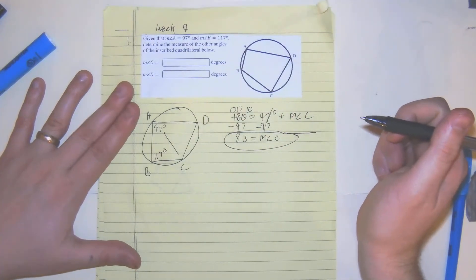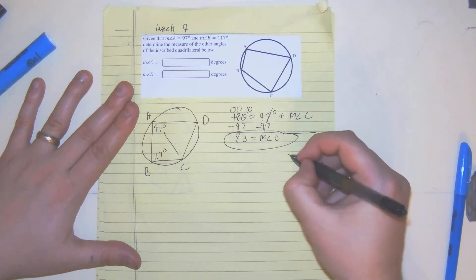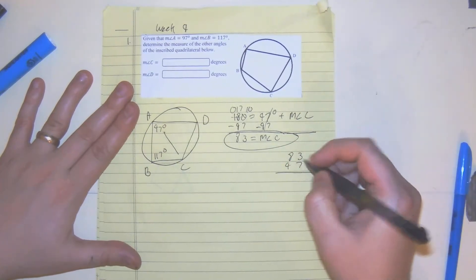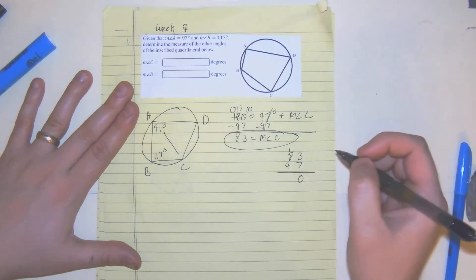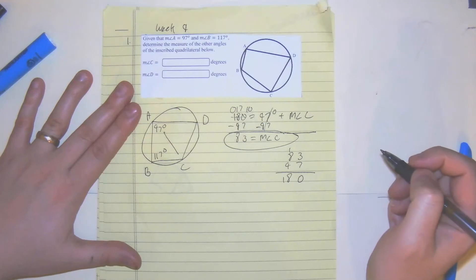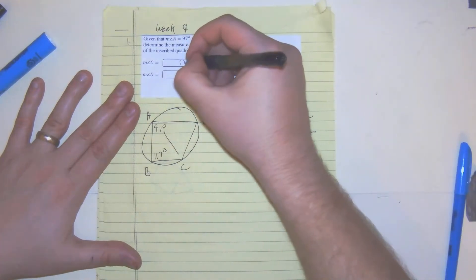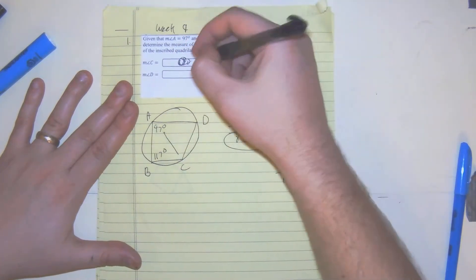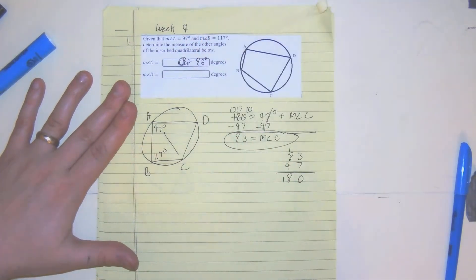So you can always check your work by going backwards and saying, okay, 83 plus 97, 0, 1, 180. Okay, so we know we did this one right, because they add up to 180 degrees.